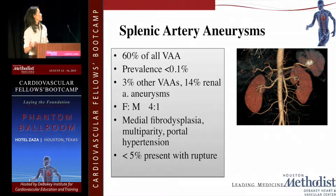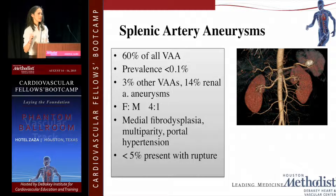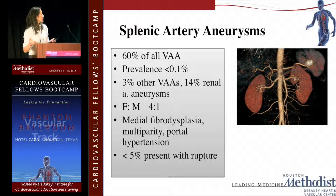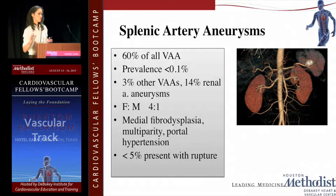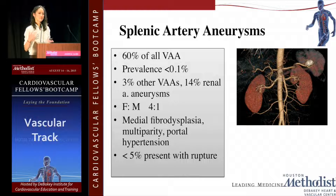Sixty percent of all visceral artery aneurysms come from the splenic artery bed. The prevalence is less than 0.1 percent. Importantly — and this sometimes appears on multiple choice questions — it is associated with other aneurysms elsewhere: 14 percent of splenic artery aneurysm patients may also have renal artery aneurysms. This is the only aneurysm in the body more common in women than men, with a ratio of 4 to 1, and it is more related to medial fibrodysplasia than atherosclerotic disease. Textbooks mention that multiparity — women having multiple children — predisposes to splenic artery aneurysm formation.